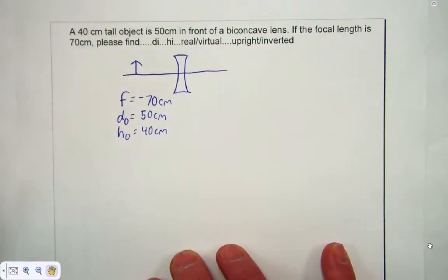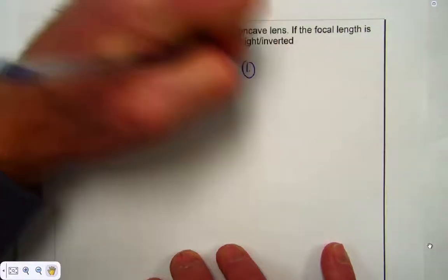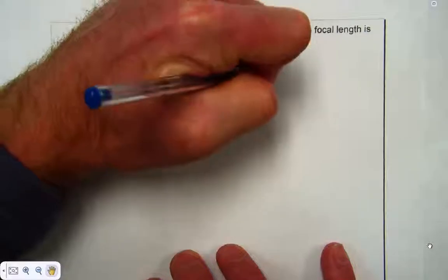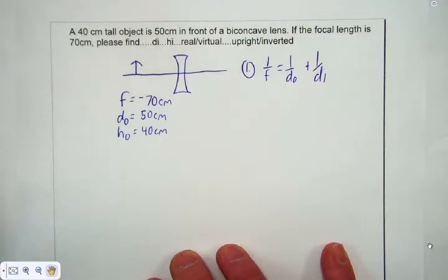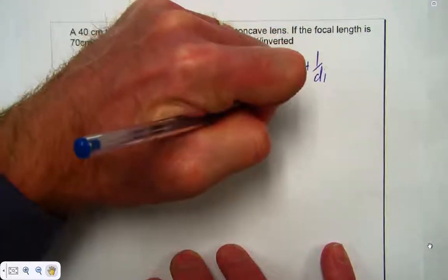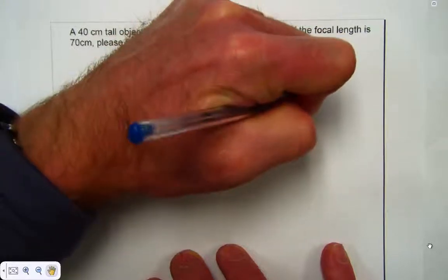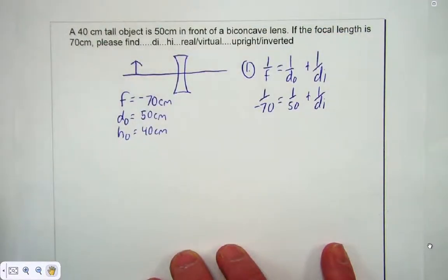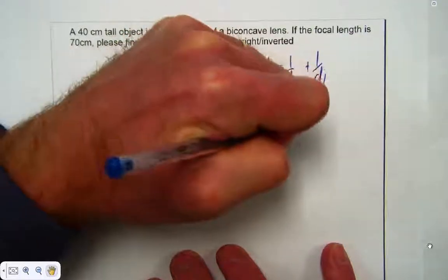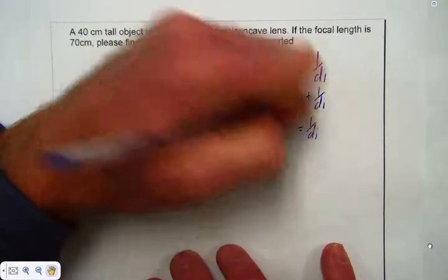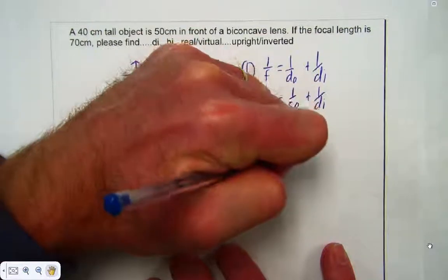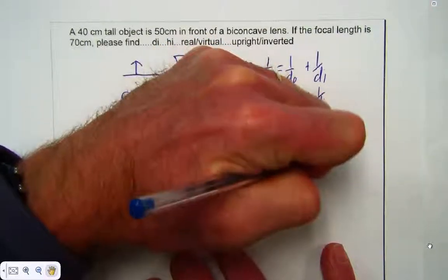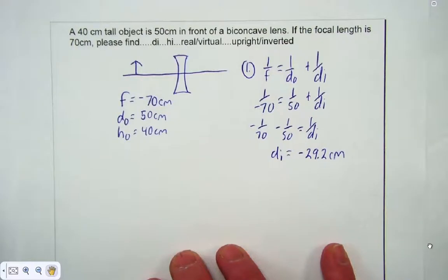Our first step is we're asked to find the d_i. We'll use the lens maker equation. We'll put in our variables and now we'll do the algebra. I'll punch this in my calculator, making sure to use parentheses, and then hit the inverse button. d_i comes out to be negative 29.2 or something close to that.